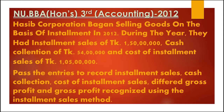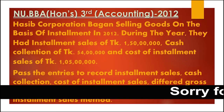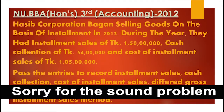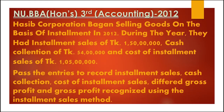HACIP Corporation began selling goods on the basis of installment in 2012. In 2012, they had installment sales of TAKA 150 Lakhs, cash collection of TAKA 54 Lakhs, and cost of installment sales of TAKA 105 Lakhs.